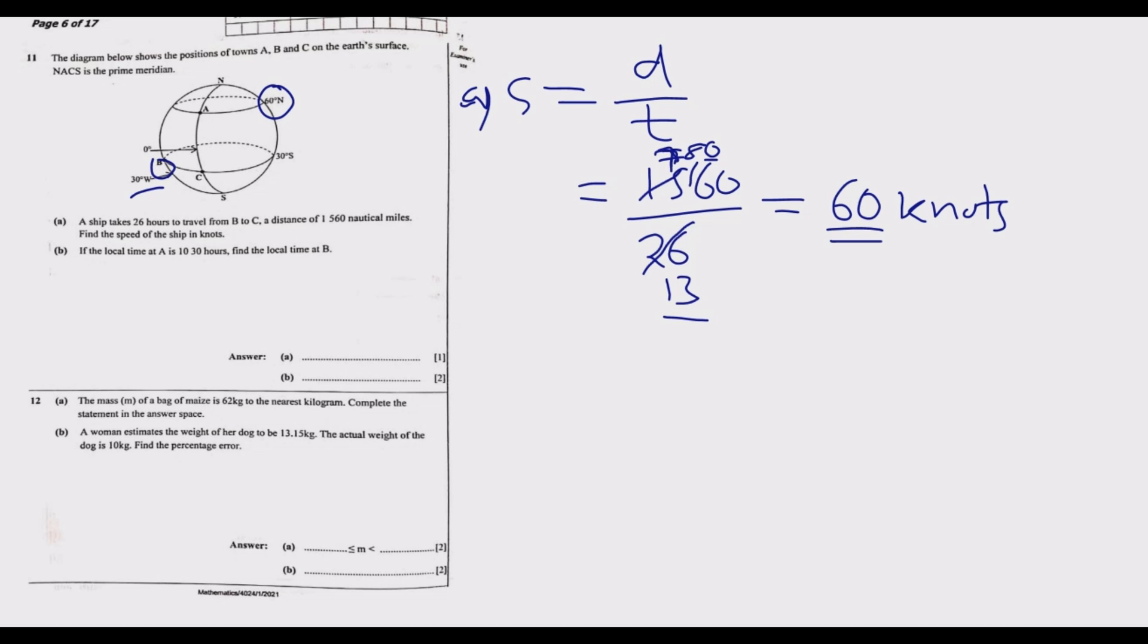When you're finding the time difference, latitude doesn't matter. Two towns can lie on different latitudes but as long as they're on the same longitude the time will be the same. It's the longitudes that we use to measure the time difference.